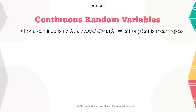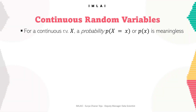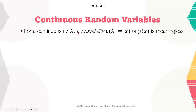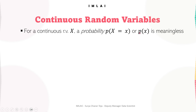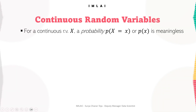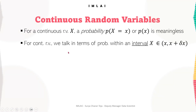Here, unlike the probability mass function used for discrete variables, we use the probability density function — called PDF — for continuous random variables. We again denote the continuous random variable as capital X. Writing P of X at a particular value small x is meaningless for a continuous variable, so that is the reason we go for the density function and talk in terms of probability within an interval.